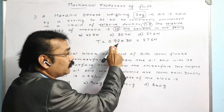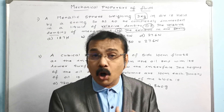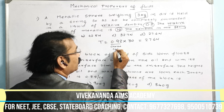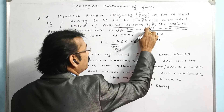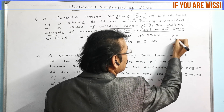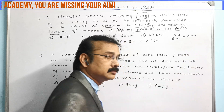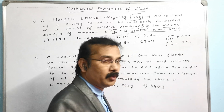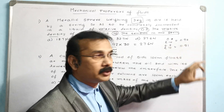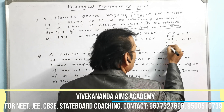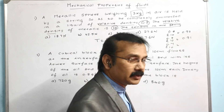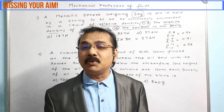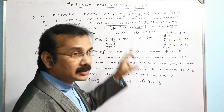The cheat code number changes based on the given relative density values. Here's how the code is derived: if relative density of liquid is 0.8 and metallic relative density is 10, the cheat code is 0.92. If the liquid relative density is 0.9 and metallic is 10, the cheat code is 0.91. If the liquid relative density is 0.7 and metallic is 10, the cheat code is 0.93. The pattern: cheat code = 1 − (liquid RD / metallic RD).